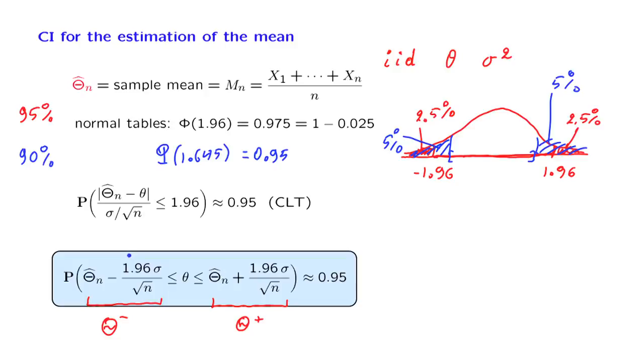There is only one issue that's left to discuss, and this is the following. In order to obtain numerical values for the endpoints of the confidence interval, we need to know sigma, the standard deviation of the random variables that we are observing. But if we do not know the value of sigma, then we may have to do some additional work.